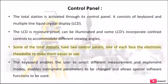Some Total Stations have two control panels, one on each face of the electronic theodolite, to make them easier to use. The keyboard enables the user to select different measurement and implementation modes, enables instrument parameters to be changed, and allows special software functions to be used.